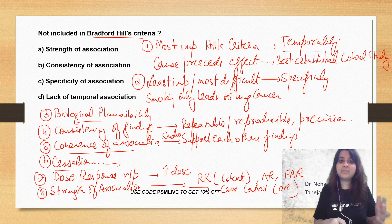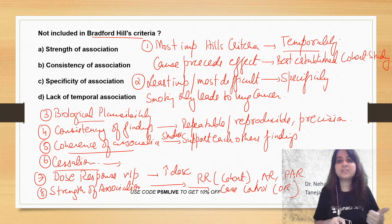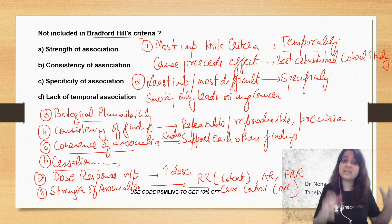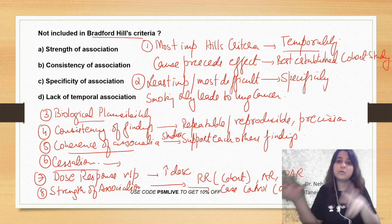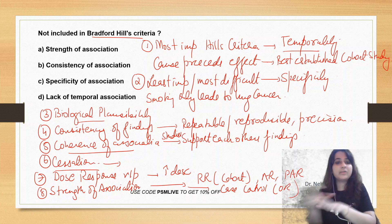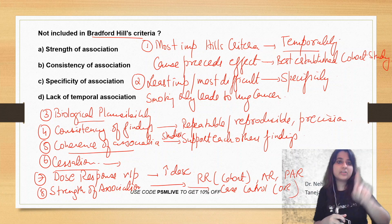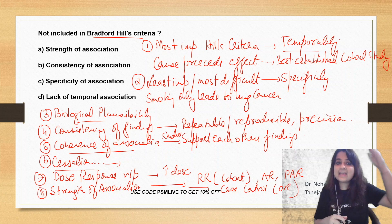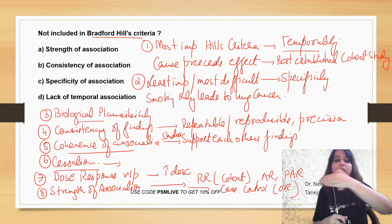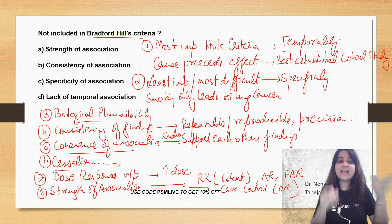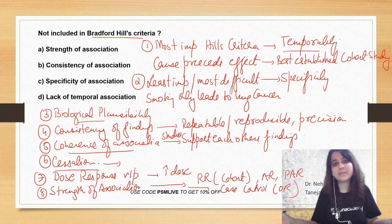So once again, how can you remember Hill's criteria? Ask yourself which is most important — temporality, cause precedes effect. Which is least important or most difficult — specificity, only one exposure leads to one outcome, which is not really possible. Then go alphabetically: B for biological plausibility; C for three C's — consistency, coherence, cessation; D for dose-response relationship; and S for strength of association.